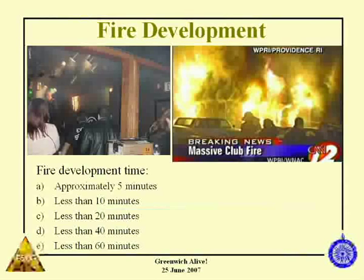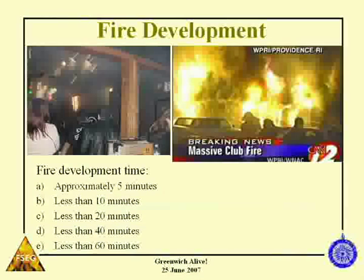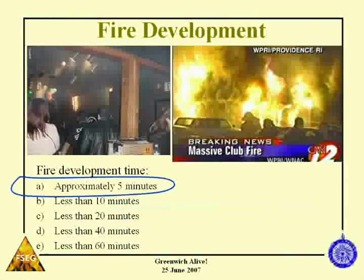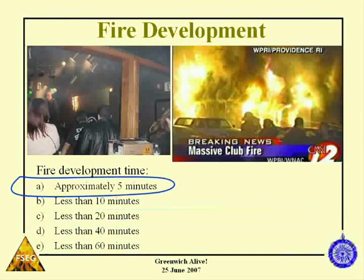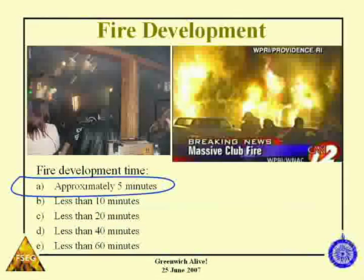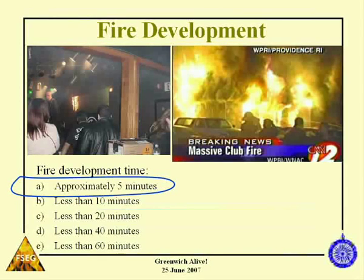Now, the question on fire development time: 15 of you said about 5 minutes, about 20 said 10 minutes, 6 said 20 minutes, 2 said 40 minutes, and 1 said 60 minutes. In fact, to get from there to there is a little bit more than 5 minutes. This is the friendly fire syndrome — people do not appreciate how quickly fire spreads, and so they don't react appropriately. Some of you said 20 minutes; if you were stood in there, you'd be toast. Simple as that. It spreads very, very rapidly. This is one of the reasons we have so many fatalities in fire — people don't understand how quickly fire can spread.